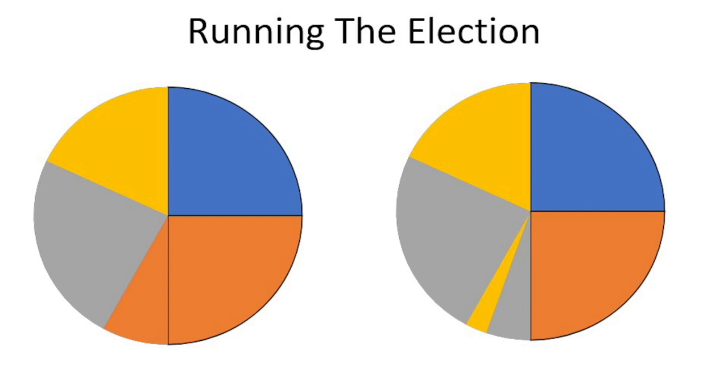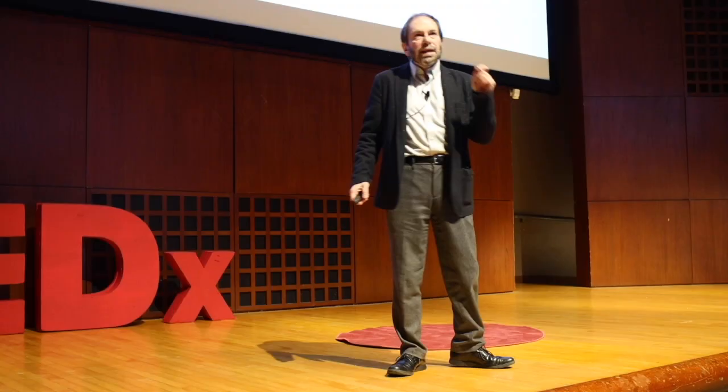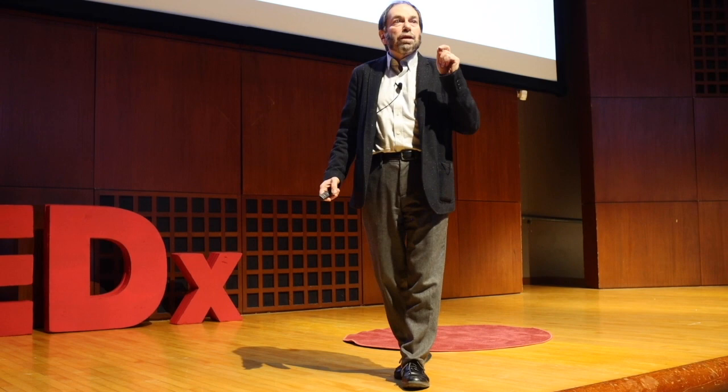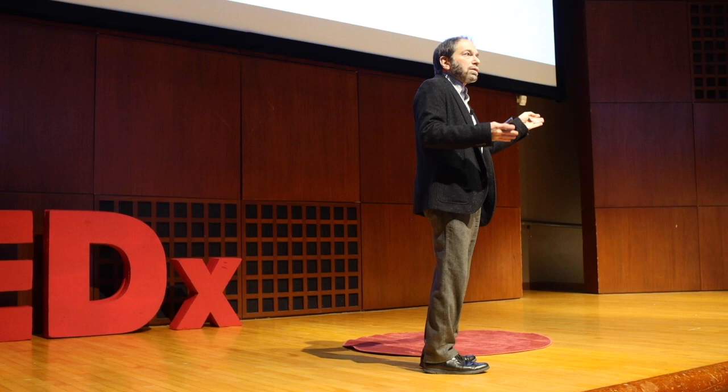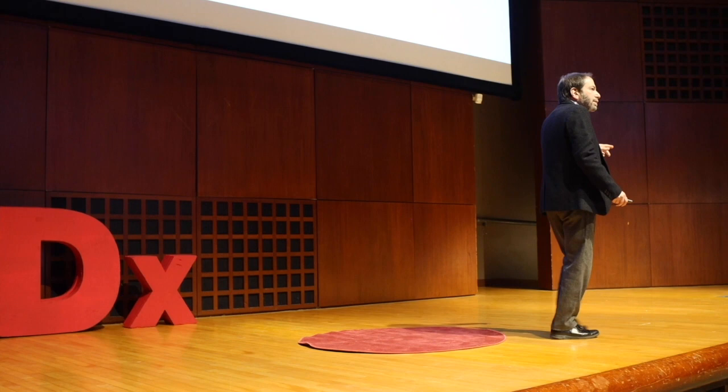We continue until we have three winners. The three winners turn out to be Al, Ben, and Sam — two jocks and a geek. That's exactly the kind of outcome we had hoped for in the first place.